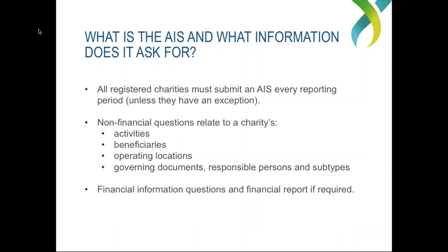For those of you who may not be familiar with the AIS, it is basically an online form that asks questions about a charity's operations and finances. It contains questions about a charity's activities, its beneficiaries, operating locations, staff, and asks you to confirm that certain charity information is up to date — your governing documents, responsible persons and subtypes. There are also financial questions included, so you will need to put in some figures from your profit and loss statement. Medium and large-sized charities will also need to submit a financial report with the Annual Information Statement.